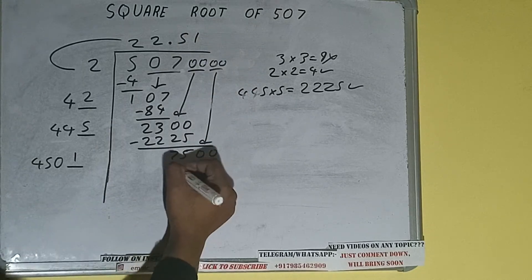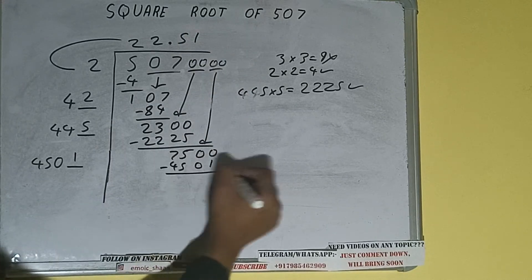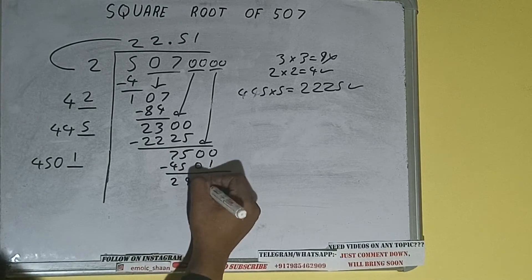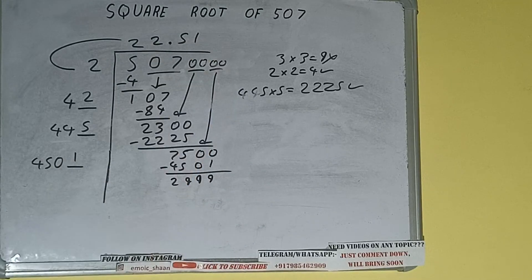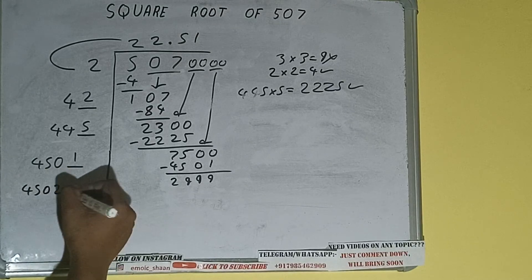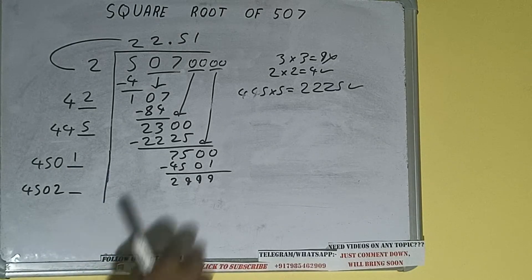Now we can try one time. 1 here and 1 here. 4501 subtract. So 4501 plus 1 will be 4502 and 1 digit extra.